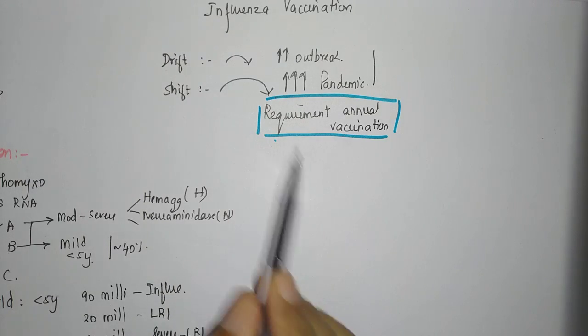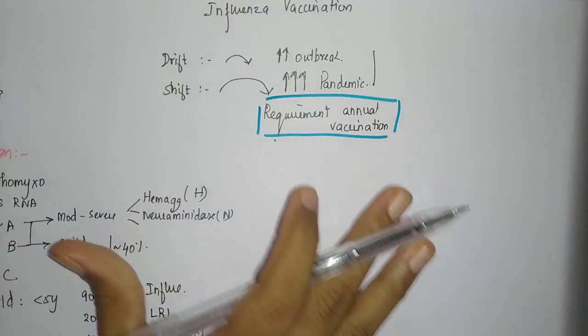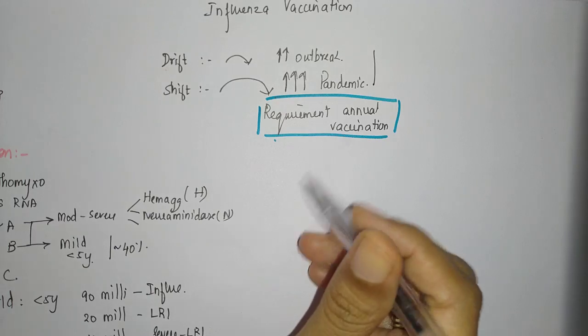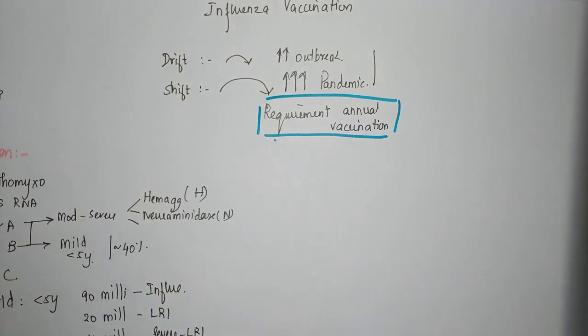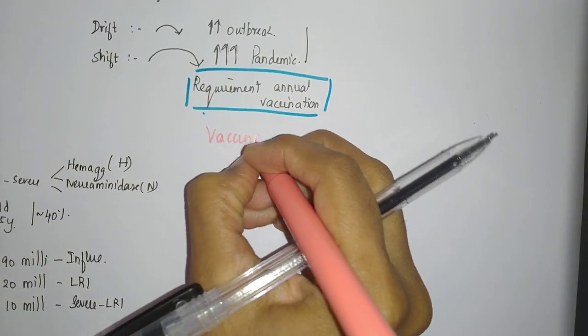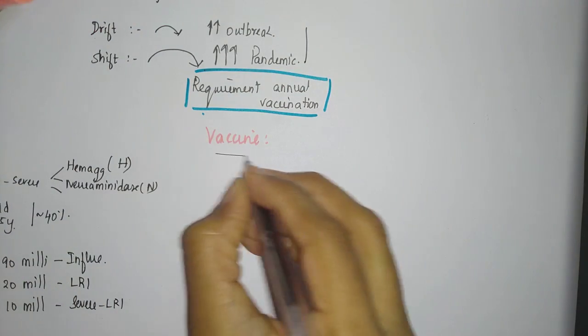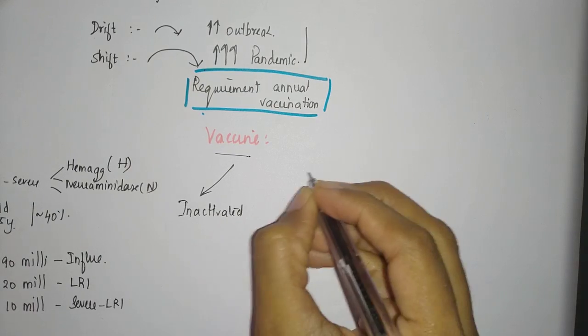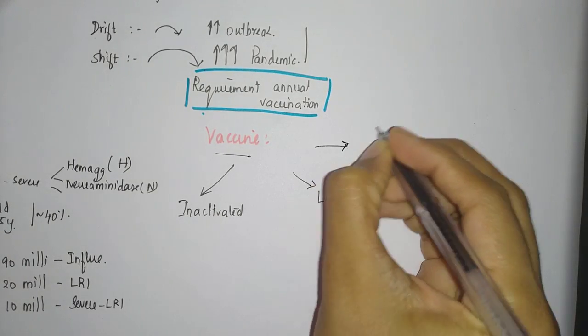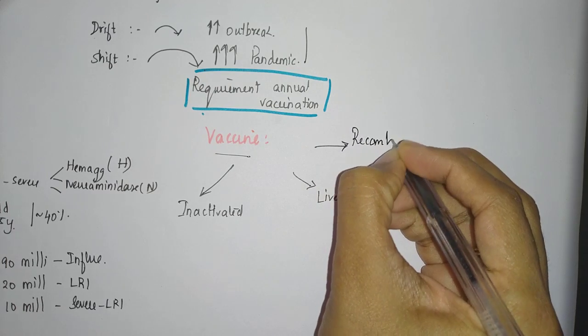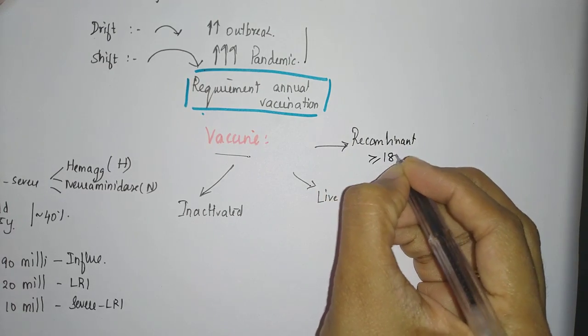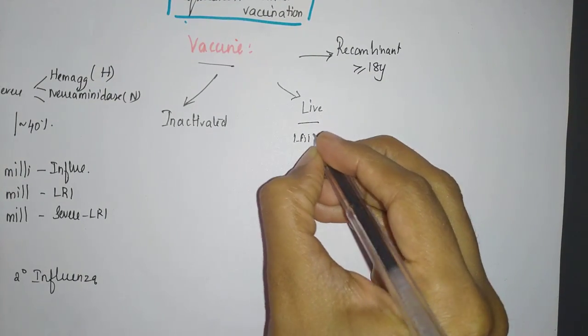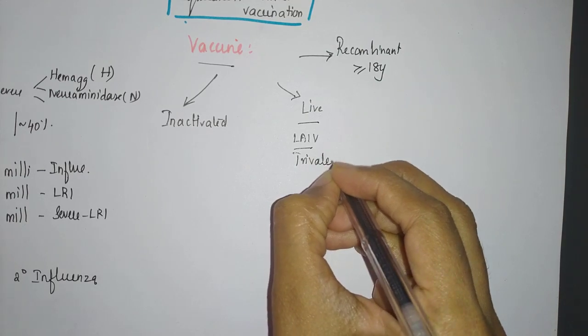Because of all these things, we started preparing a vaccine. There are two types of vaccine, and recently one more is added. The types are: inactivated, live attenuated, and recombinant. Recombinant is approved for more than 18 years age group. Live is live attenuated influenza virus, a trivalent vaccine.